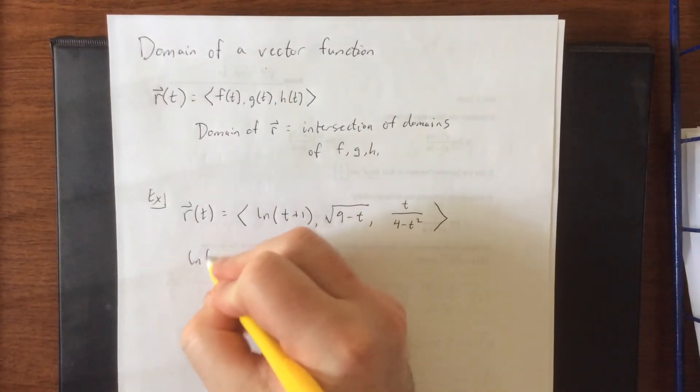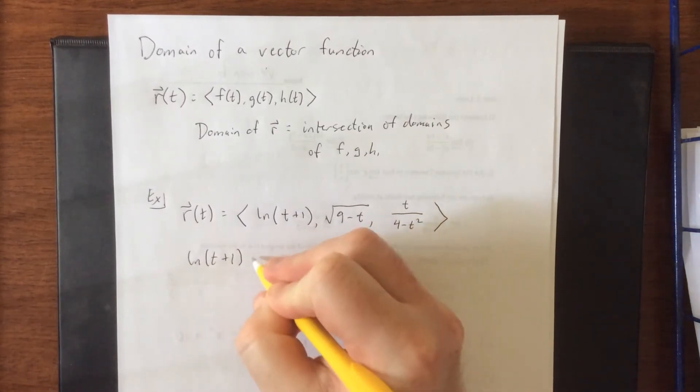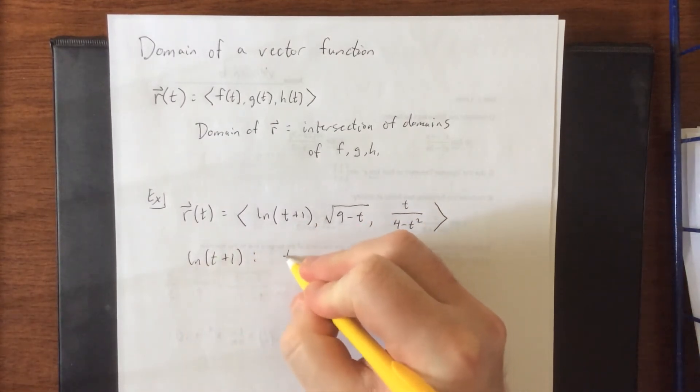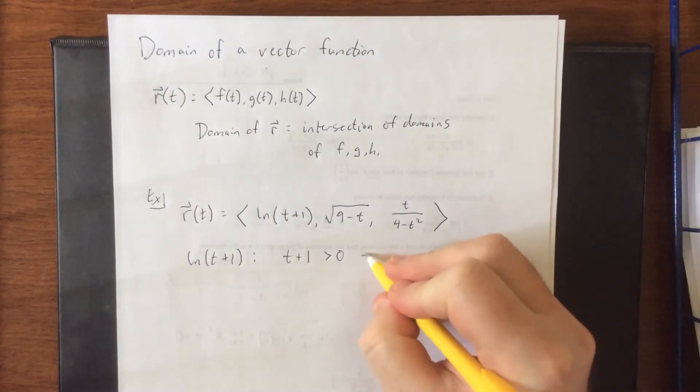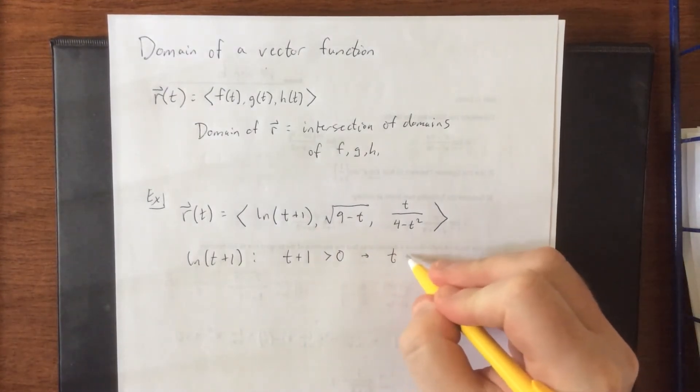For the natural log, the argument of a natural log, the thing inside a logarithm, has to be a positive number. Solving this by subtracting 1 from both sides, we'll get that t is greater than negative 1.